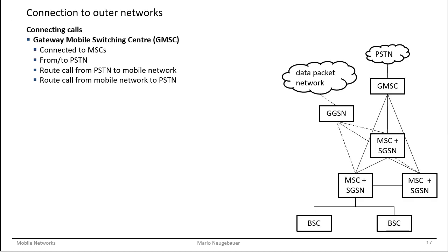Looking in more detail at the gateway mobile switching center: it connects the MSCs to the PSTN, and each MSC has a connection to this one gateway MSC, making it a single point of failure for the connection into the PSTN. Incoming calls from the PSTN into the mobile network go through this gateway mobile switching center, and vice versa — outgoing calls from mobile stations travel over the BSCs and MSCs via the gateway MSC into the PSTN.